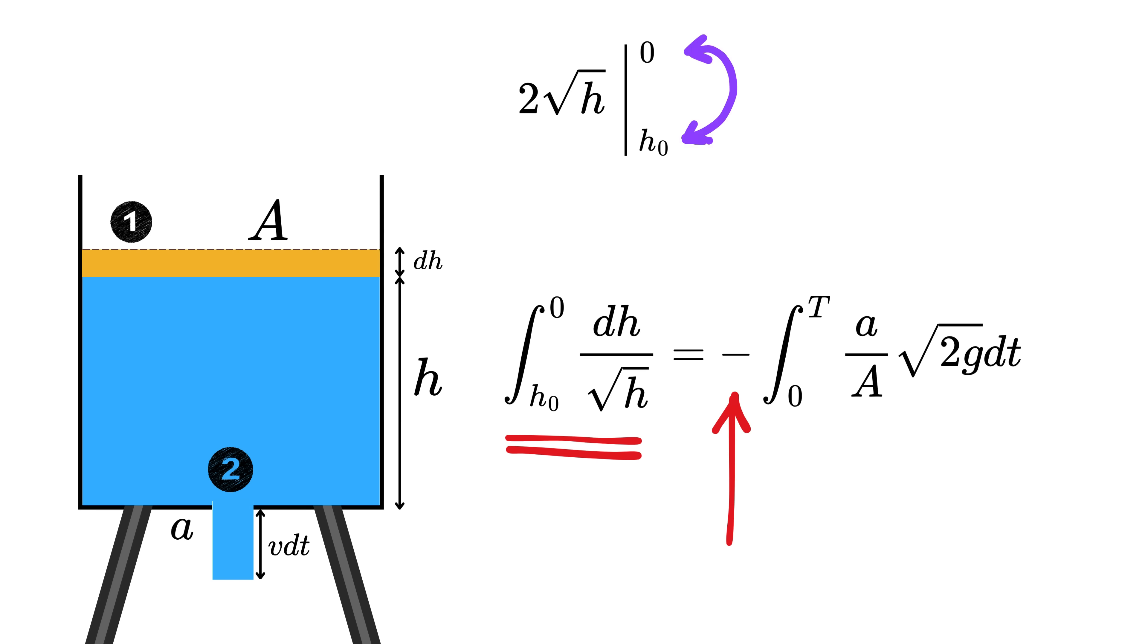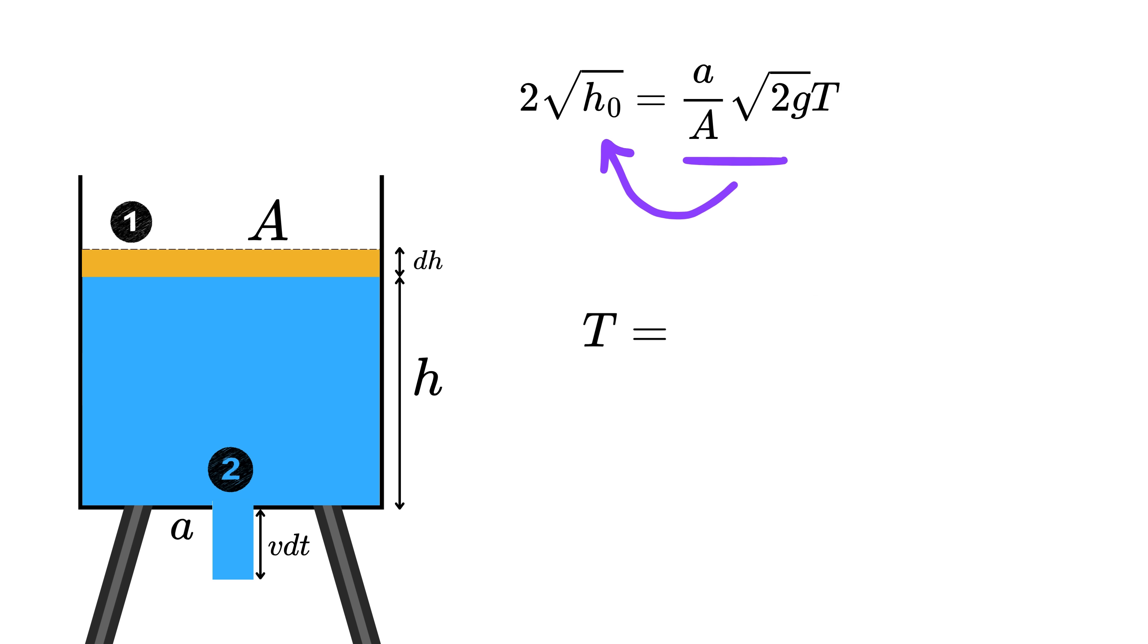we can reverse the limit and get 2 times square root of h from 0 to h sub 0, which equals 2 times square root of h sub 0. Then all of these are constant, so this one is super easy. We get small a over A times square root of 2 times g times t. Now take all of them here to get t equals A over small a times square root of 2 times h sub 0 over g, and that's it.